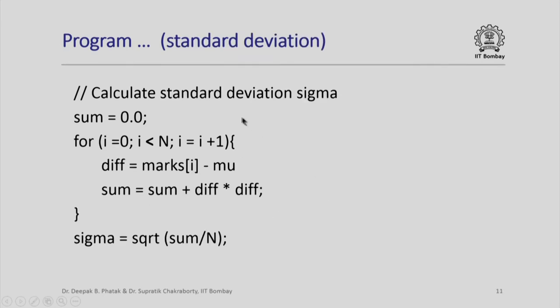Next, I calculate the standard deviation sigma. I again start with sum equal to 0, because that is the starting point. I want to accumulate sum of the square differences. I set up the iteration again exactly the same way, but this time I first calculate the difference of i-th element of marks with the average and calculate the square of that difference, which I add to the running sum.